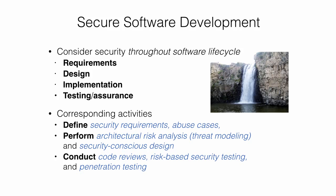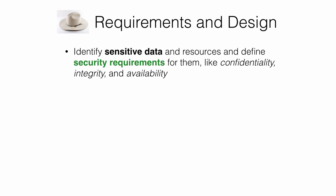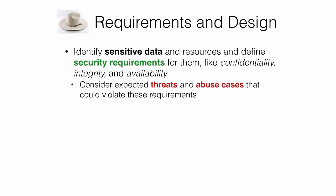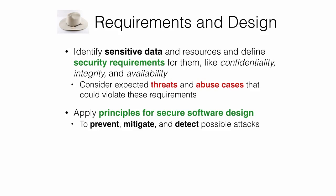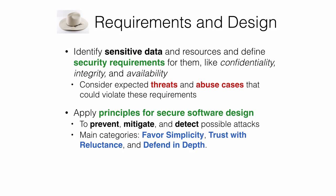For requirements and design, the course covers identifying sensitive data and resources and defining security requirements like confidentiality, integrity, and availability, as well as expected threats and abuse cases. Design principles fall into three main categories: favor simplicity, trust components with reluctance, and defend in depth by relying on many defenses rather than one. As an exemplar of this design practice, the course examines the very secure FTP daemon, written with security in mind and employing many of these principles.